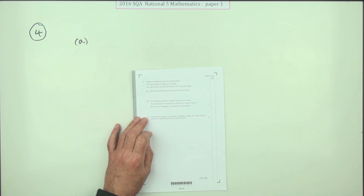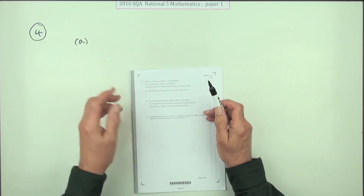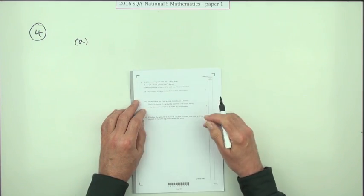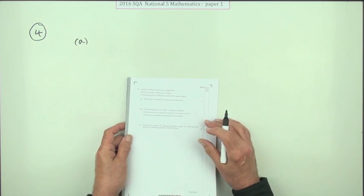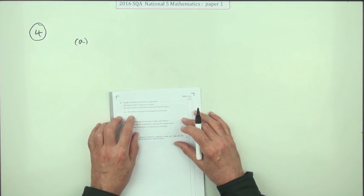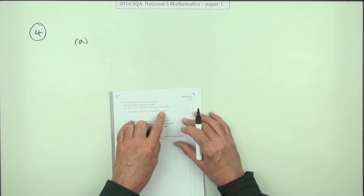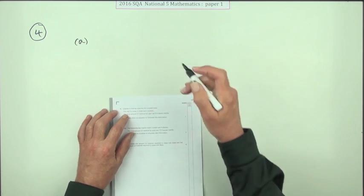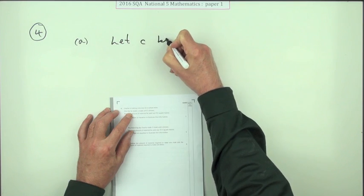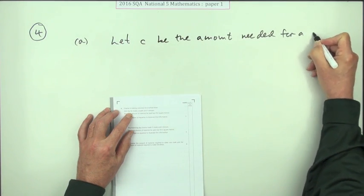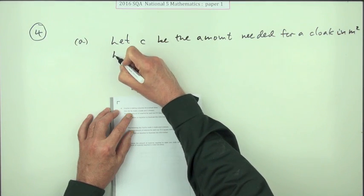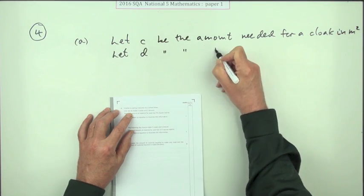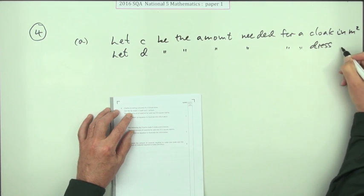It doesn't tell you which letter to use, which can be annoying because then you wonder if you have to specify, if you have to introduce them. I'm just going to have to do that. It's the amount of material to make cloaks and dresses, so I'll use c and d. Let c be the amount needed for a cloak in square meters, let d etc. I can just use dittos for a dress in square meters.